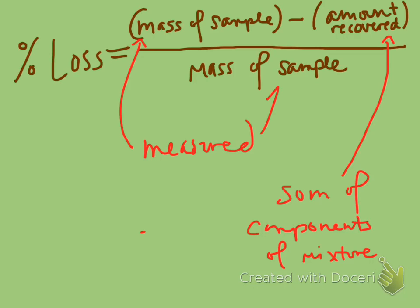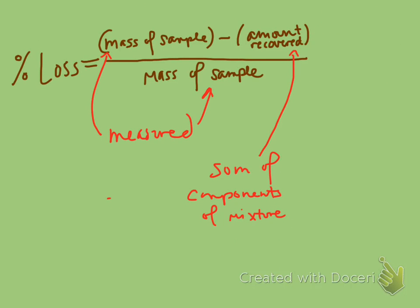And the mass of the sample is used in two different places. It's used on the top because you're going to subtract the amount of stuff you recovered from it. And it's also used to divide it because you're looking at your loss as a percentage of what you had. And this is, of course, same as with error. It's times 100. That's what gets you the percentage.